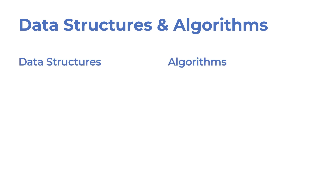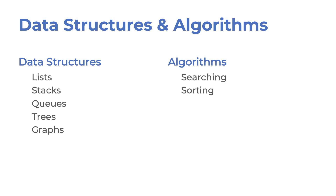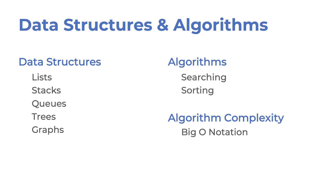Some universities offer data structures and algorithms in two separate classes. Some call it just algorithms, but the contents are more or less the same. They teach you about data structures such as lists, stacks, queues, trees, and graphs, and also cover algorithms to manipulate those data structures, such as searching and sorting algorithms. One thing that is particularly important is algorithm complexity — make sure you pay extra attention to big O notation, which is used to measure algorithm complexity and express how fast a function is growing in terms of execution time.